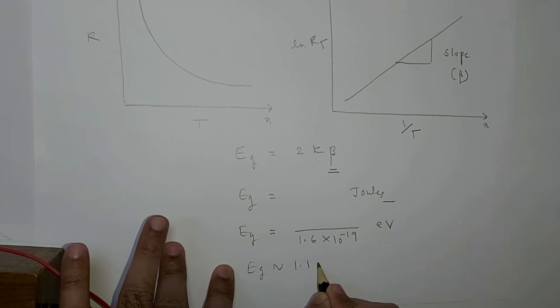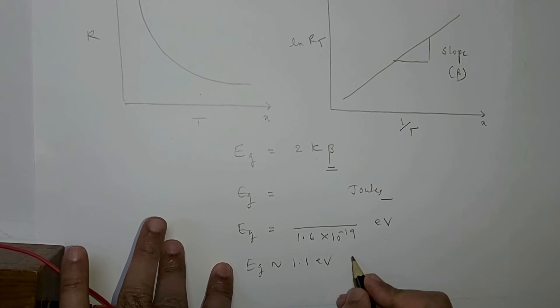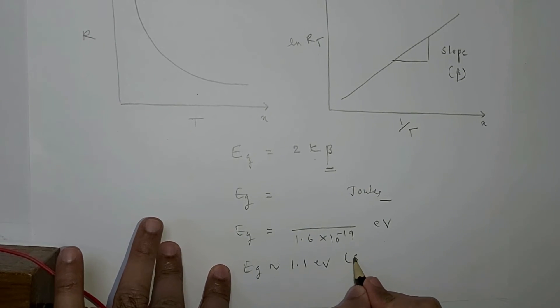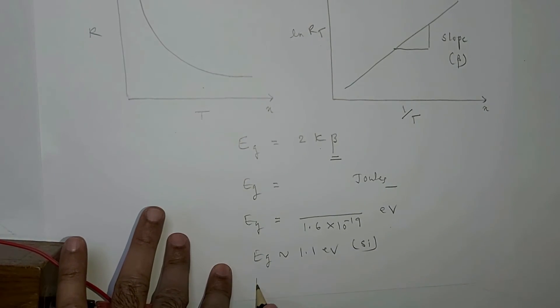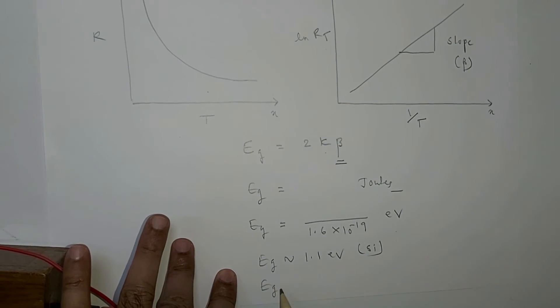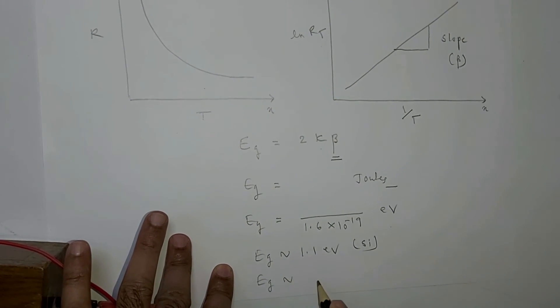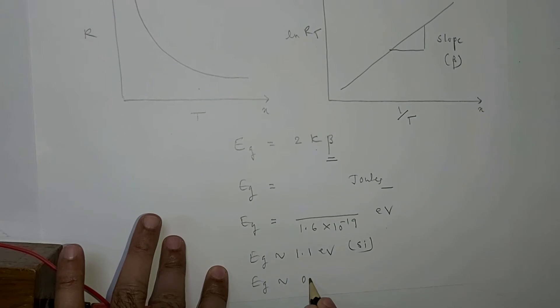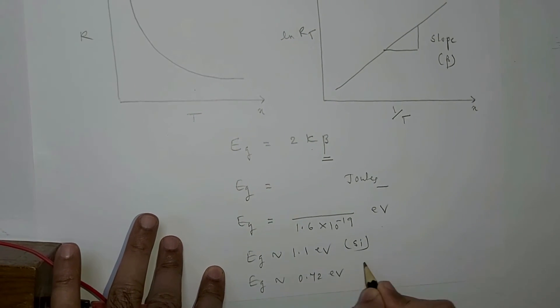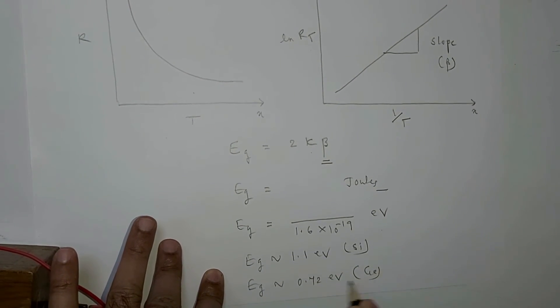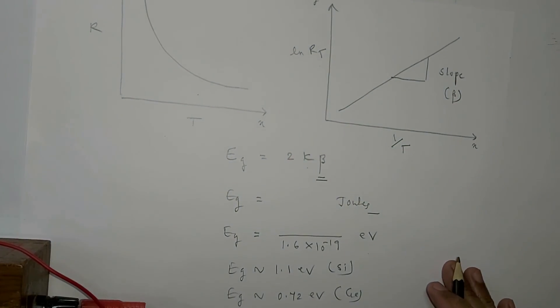If you substitute all the values and get an answer close to 1.1 electron volts, the material is silicon. And if your answer is very close to 0.72 electron volts, then the material is germanium.